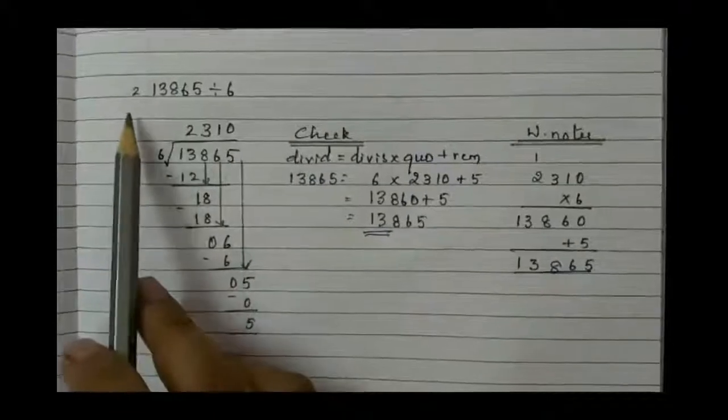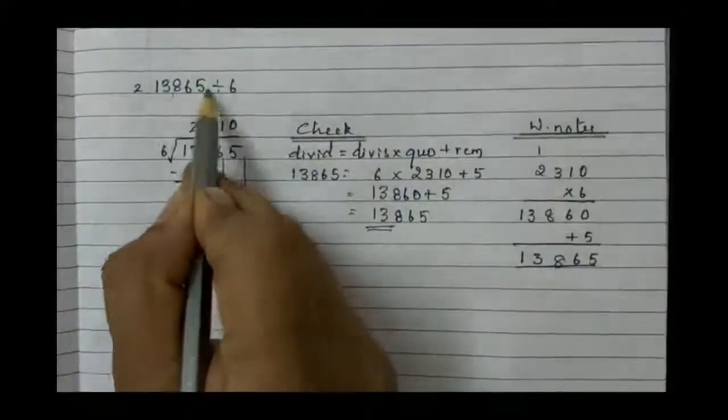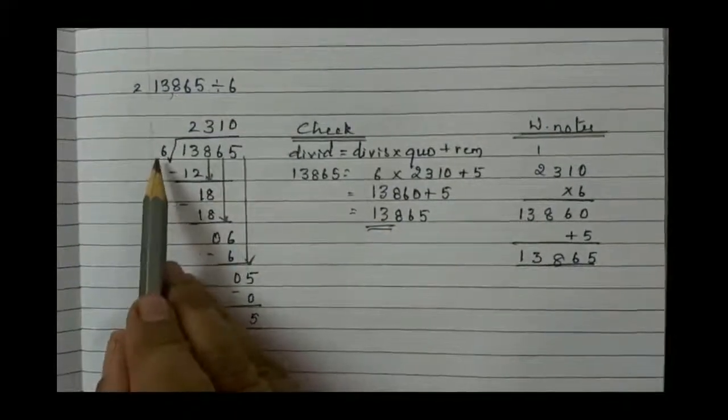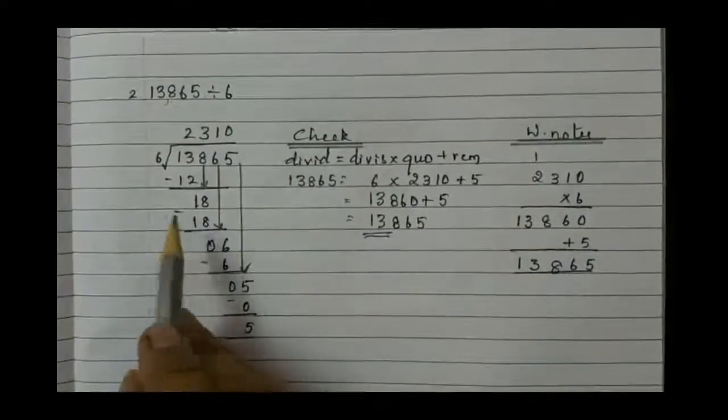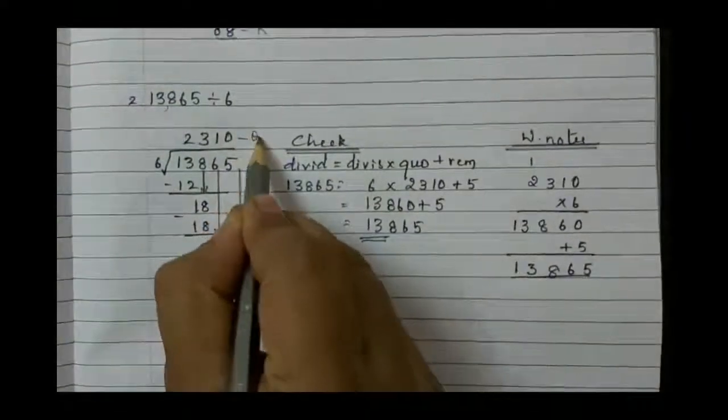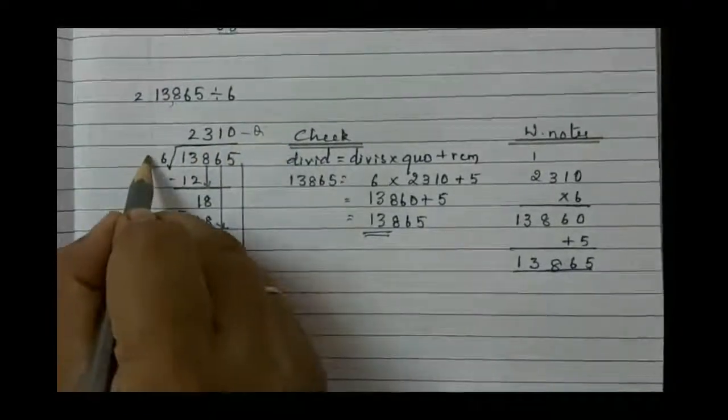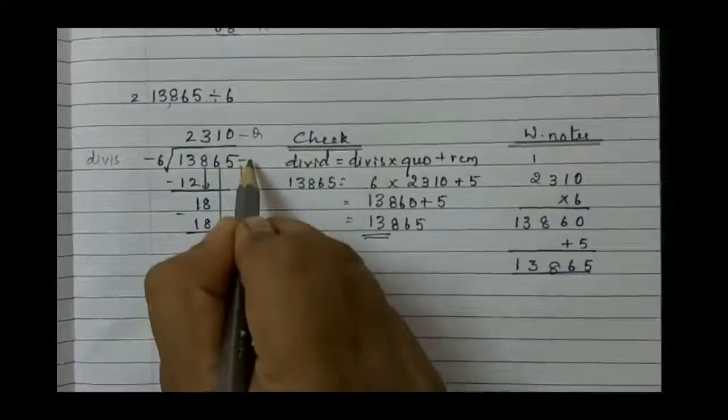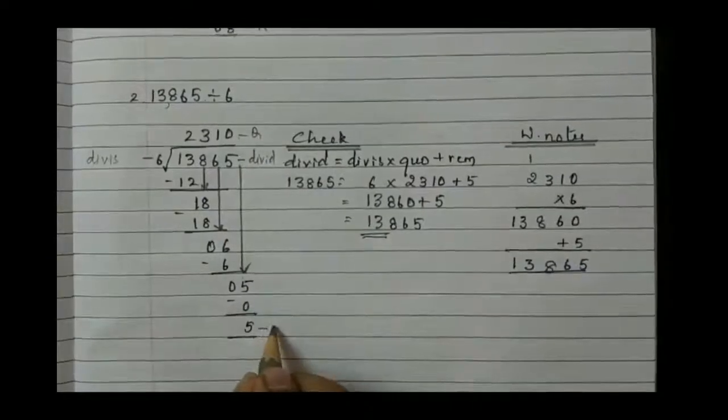Let us begin the second one, that is 13,865 divided by 6. Do the regular division in the same way. The quotient is 2310 and divisor is 6. Whereas the dividend is 13,865 and remainder is 5.